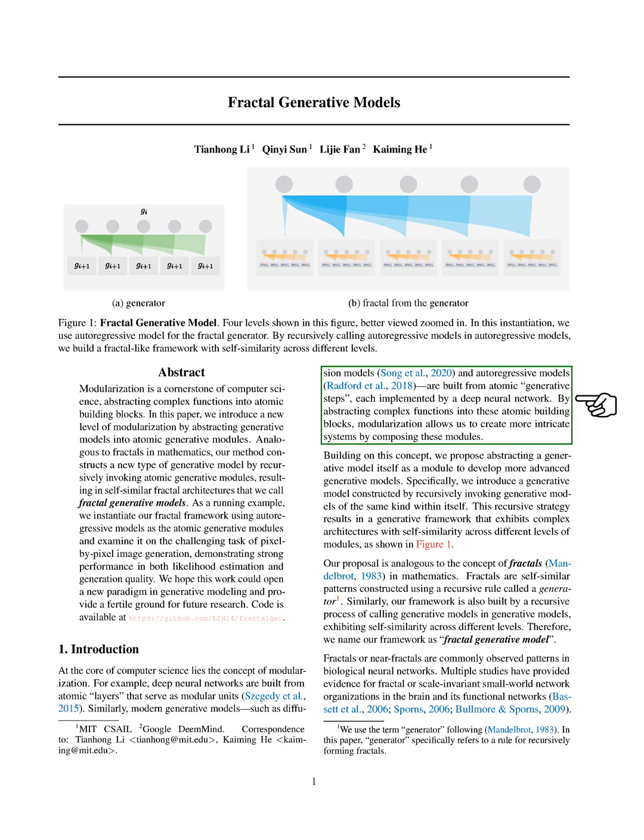Similarly, modern generative models, like diffusion and autoregressive models, consist of fundamental generative steps, each executed by a deep neural network. By breaking down complex functions into these simple components, we can create more sophisticated systems by combining these modules.